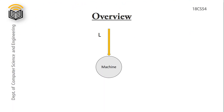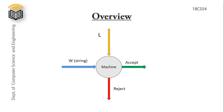Now let's have a short overview on what actually a machine is. FSM is a machine designed based on the language defined. For a given language L, we design a machine so that we can give input W which is a string. The machine will take input and process it, then give either accept or reject as output.